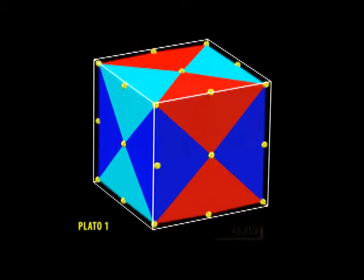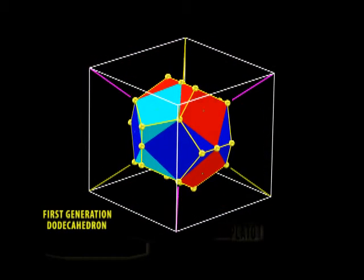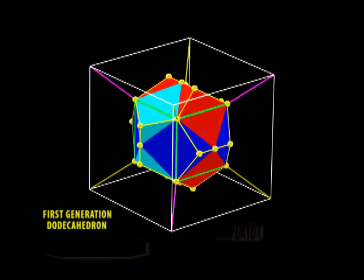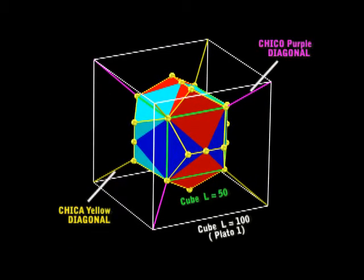Let's go to the dodecahedron on its own. There are eight vertices in the dodecahedron and they will form a cube. The edges of the 40-piece Plato cube are 100 and the little green cube is 50, exactly the same measurement of a Chico cube. This is the smallest dodecahedron that I could make.